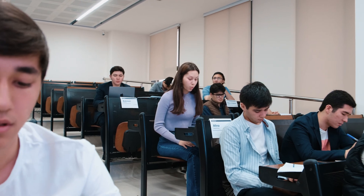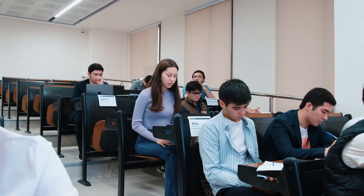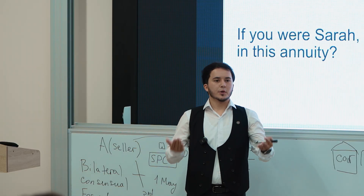Afina answers the first question: we have 25 years until her retirement, which gives us 300 periods because we have a monthly compounded interest rate, making it 0.5% per period. The present value should be $155,982.